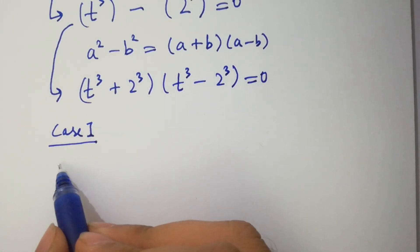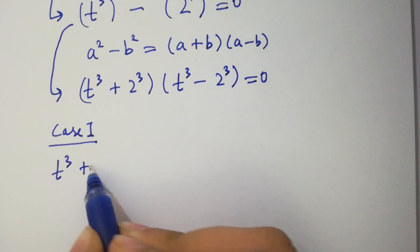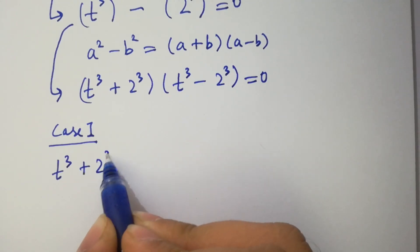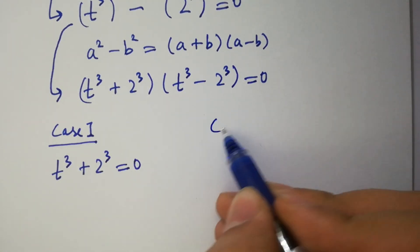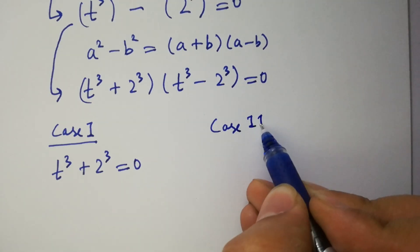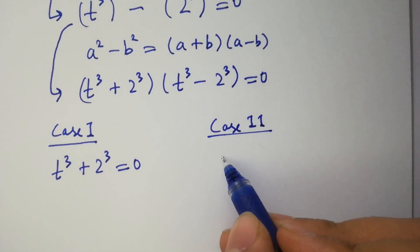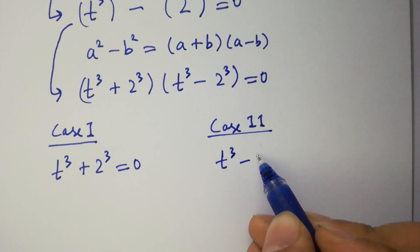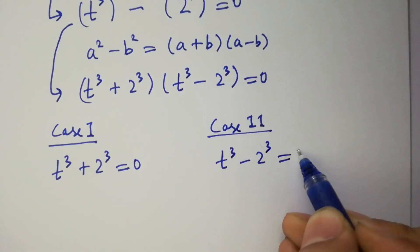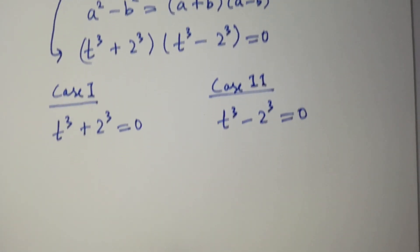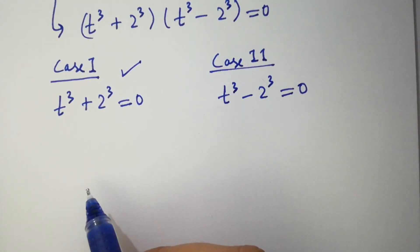t cubed plus 2 cubed equals 0. And the second case is t cubed minus 2 cubed equals 0. First of all, I am going to solve Case 1.